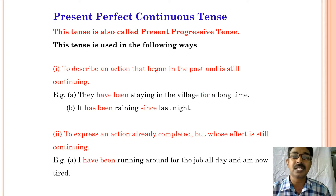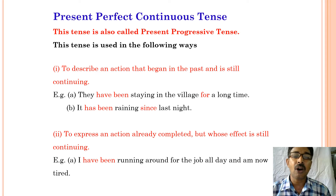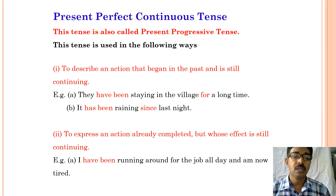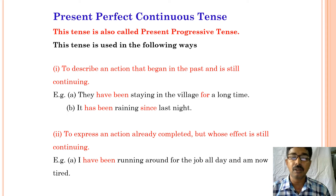Present perfect continuous tense is used to describe an action that began in the past and is still continuing. Example: they have been staying in the village for a long time. It has been raining since last night. This tense is also used to express an action already completed but whose effect is still continuing. Example: I have been running around for the job all day and now I am tired.